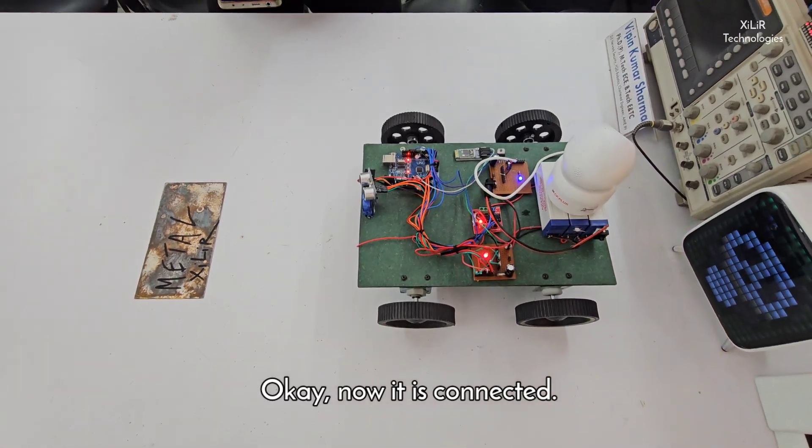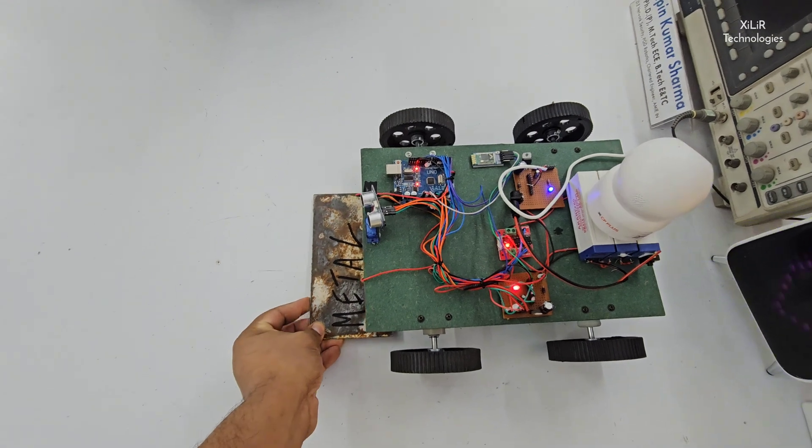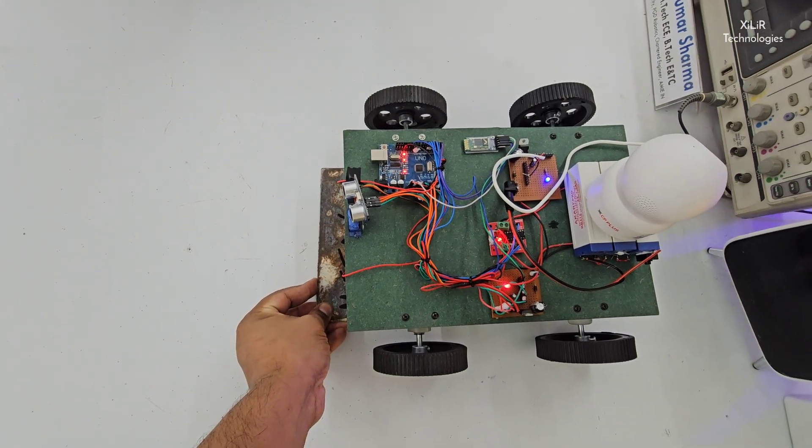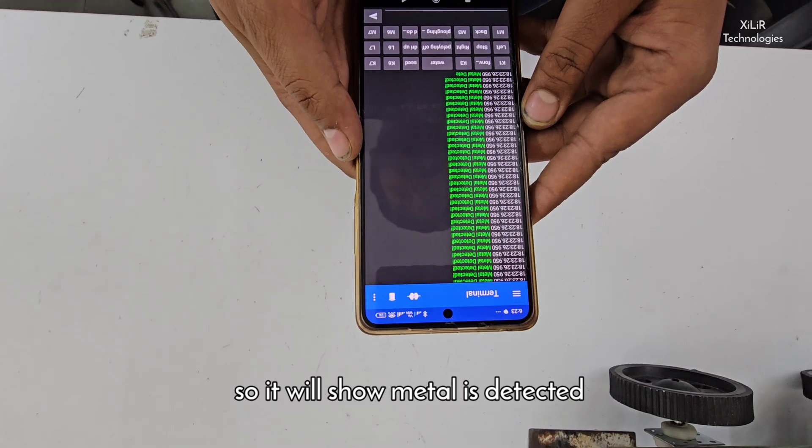Now first we will see the output of this metal sensor. So if this metal comes, you heard a sound - that is metal sensor sound. So it will show metal is detected.